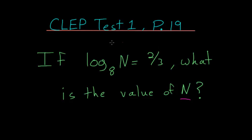So another way to look at this logarithmic equation is that it's 8 raised to the 2 thirds power is equal to n. So we can rewrite this, 8 to the 2 thirds power is equal to n.